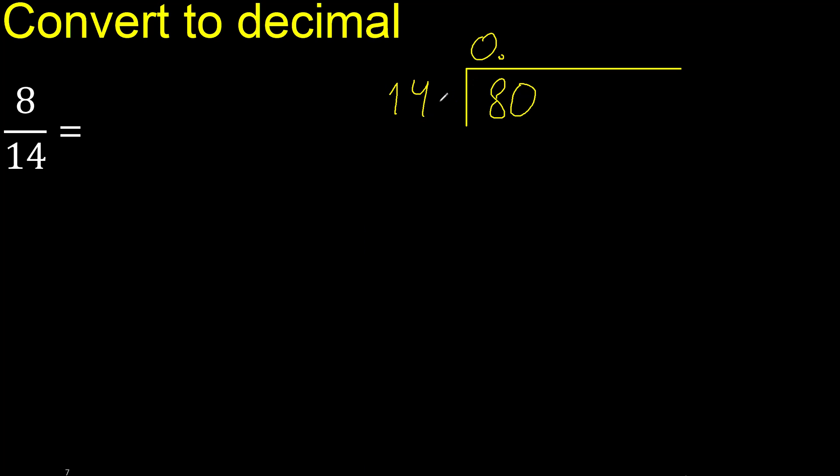80 is not greater than 14. 14 multiplied by which number is nearest to 80 but not greater? Multiply by 6 is greater. Multiply by 5 is 70.